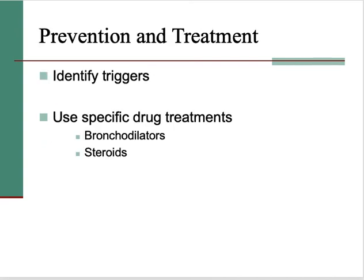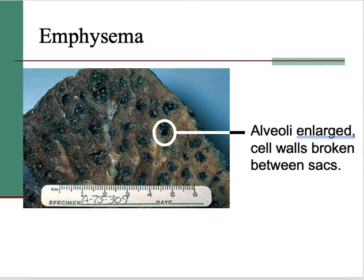Prevention involves identifying your allergens or triggers for asthma attacks and avoiding them. Treatment involves using bronchodilators, usually administered as inhalers, which have a steroid element that helps to open up the tiny bronchioles. Another disease you could look at is emphysema, but you really only need to know details on one, and asthma is probably the easiest.